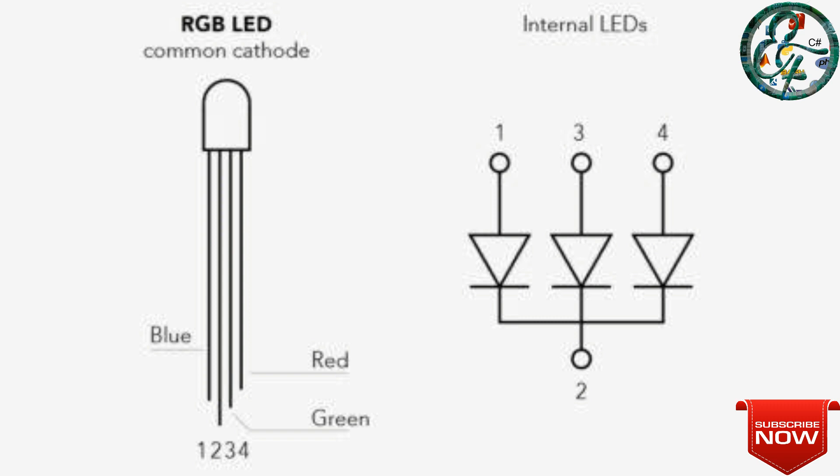For the four pins: the first pin is blue color, the second pin is the ground pin — this is the common cathode, the third pin is green, and the fourth pin is red. From each pin, we can connect the path to 3.3 volts and emit that particular color. Connect the second pin to the ground.